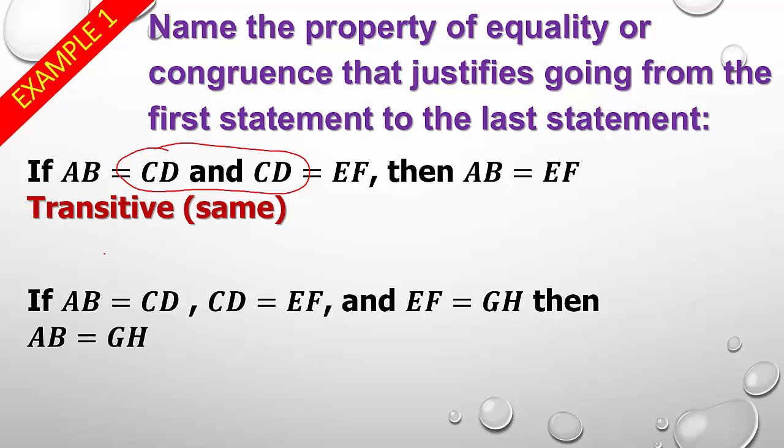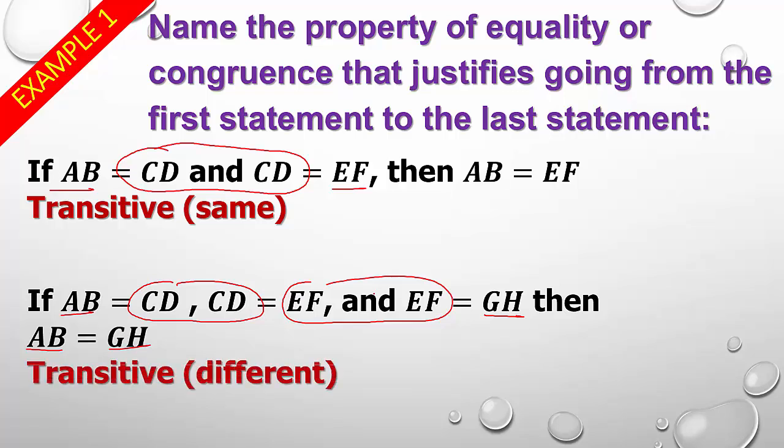Now, moving on, if we have, if AB is equal to CD, CD is equal to EF, and EF is equal to GH, then AB is equal to GH. So, basically, what we did is we took and we added one. And if you look, here's one pair, here's another pair. So, we have AB and GH. AB and GH. So, basically, if you have one pair, then whatever isn't paired is equal or congruent. If you have two pairs, again, whatever isn't paired is equal or congruent. So, this is Transitive Differing. Okay? Pretty simple.